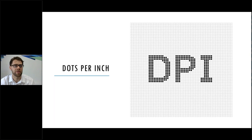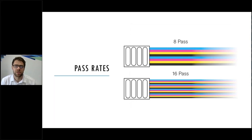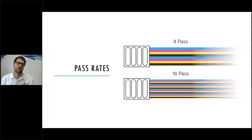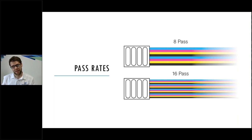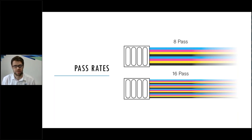In a high quality mode you might see something like 900 by 900 dots per inch; for a high speed mode you might see 600 by 600 dots per inch. In terms of pass rates, the width of your printhead is a fixed size, and it's the number of times your printhead travels back and forth to build up that width. The one at the top is an 8-pass example, the one at the bottom is 16-pass. The higher the number of passes, the less ink goes down at one time, giving a higher quality result — though it takes longer to print.